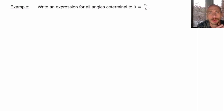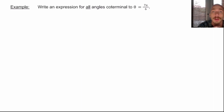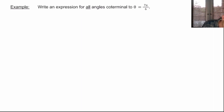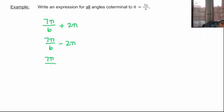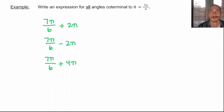Before we move on to actually solving trig problems with angle measures outside of 0 to 2π, I want to talk about writing an expression for all angles coterminal to θ = 7π/6, because that's going to become relevant when we solve trig equations. 7π/6 + 2π is coterminal, 7π/6 − 2π is coterminal, but I could add 4π or 6π or any multiple of 2π — any integer multiple of 2π.